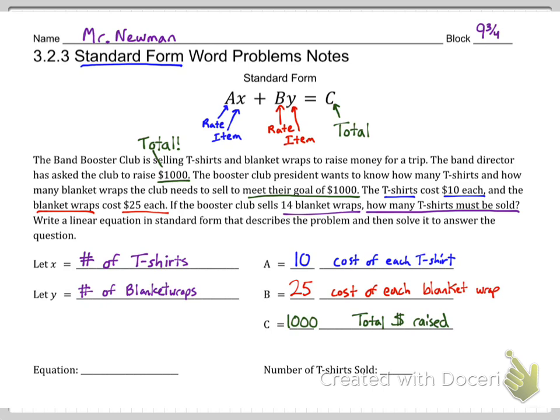So we set up our equation by saying, all right, well ten x, that's ten times the number of t-shirts, that's going to be the total money from all the t-shirts. And twenty-five times y is going to be all the total money from all the blanket wraps. If we add those together, that should equal the total. Notice the standard form. Do you see how ten and twenty-five are our rates? And they're multiplied by their respective variables.